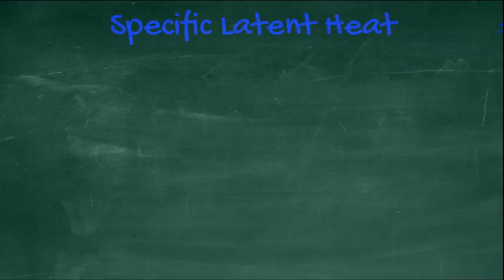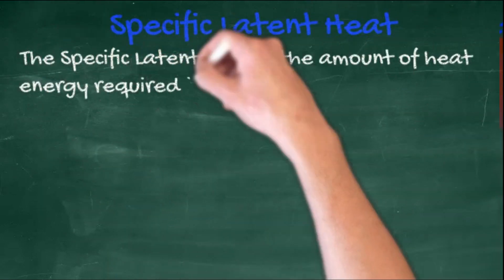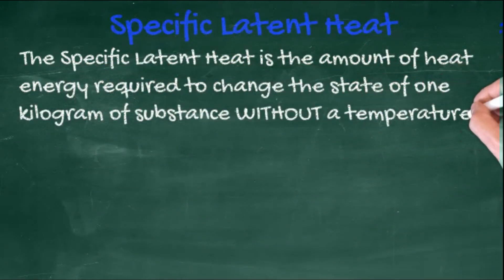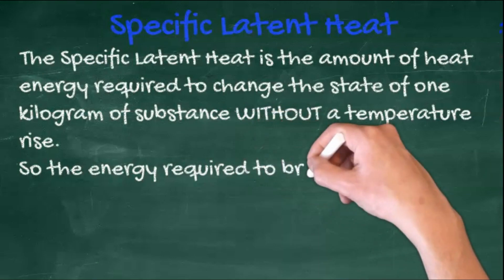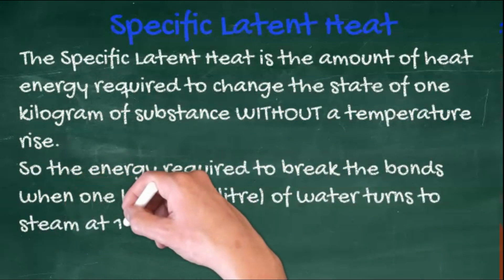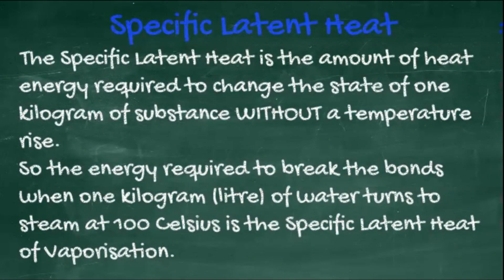The specific latent heat is the amount of heat energy required to change the state of one kilogram of substance without a temperature rise. So the energy required to break the bonds when one kilogram of water turns into steam, for example.